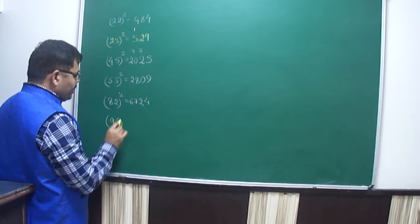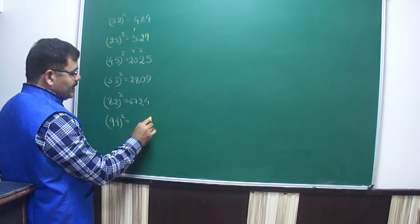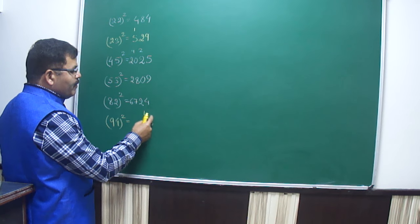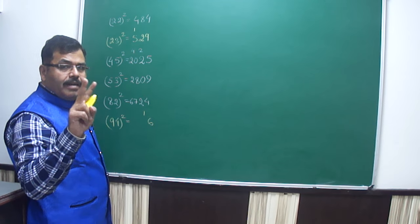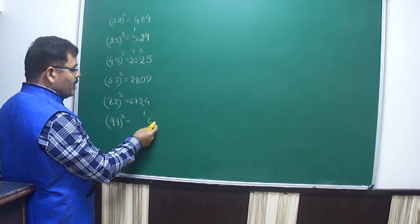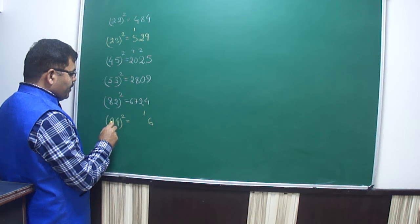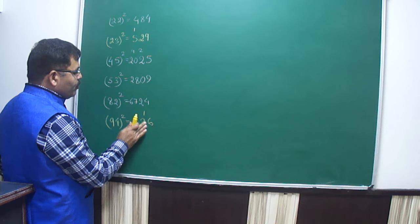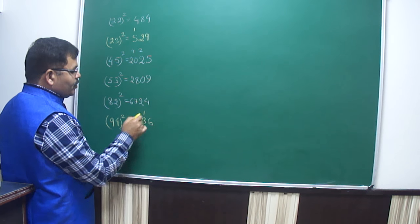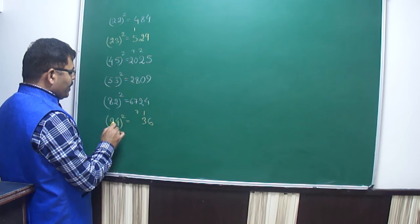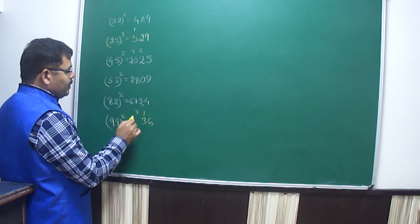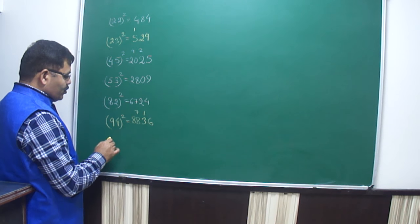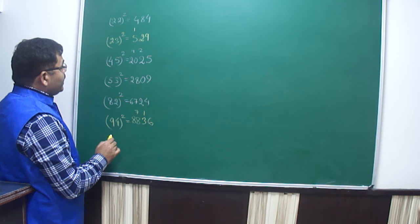Suppose someone has to find 94 squared. 4 squared is 16 — write 6 and carry 1. Whenever the square of any number comes as 2 digits, write only 1 digit and carry the other. Now 9 into 4 is 36, double of 36 is 72, plus the 1 carried makes 73 — write 3 and carry 7. Then 9 squared is 81 plus 7 equals 88. So the answer is 8836.